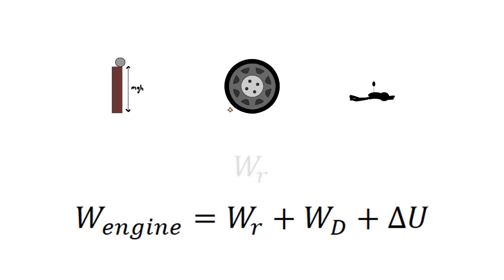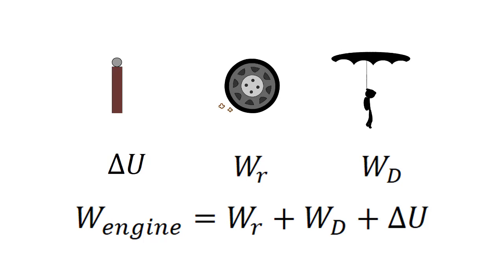Where WR is the energy lost by friction, WD is the energy lost by air drag, and delta U is the potential energy. We will need to use this formula to solve this question.